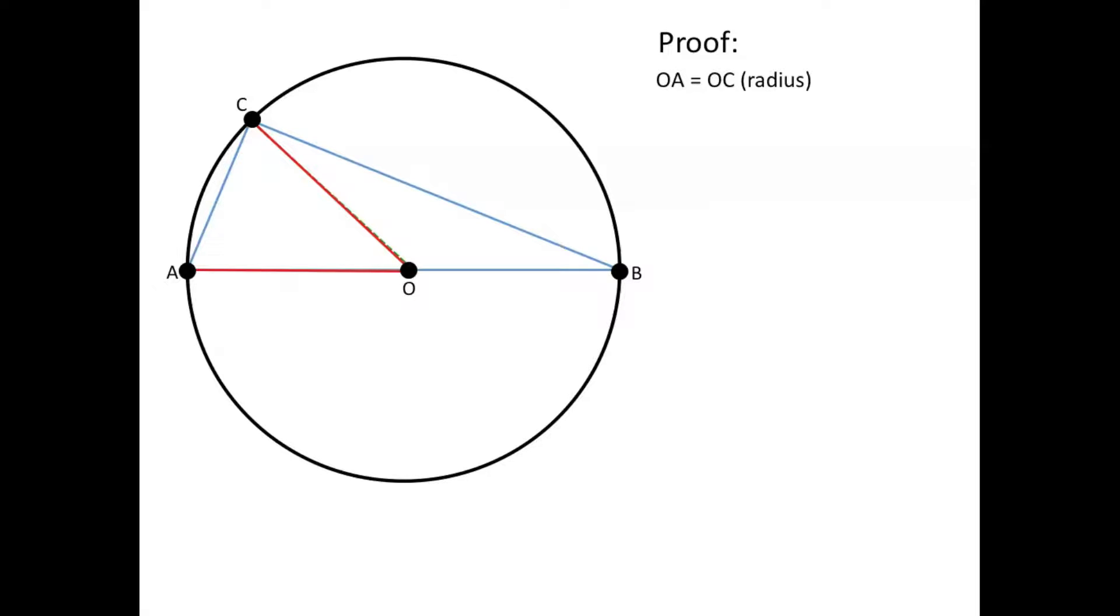And when doing so we've created this isosceles triangle since the line OA and OC are equal. So since triangle OAC is isosceles, then that means that its base angles, which is a property of isosceles triangles, are equal. So the base angles are angle CAO and angle OCA and we can mark those as alpha.